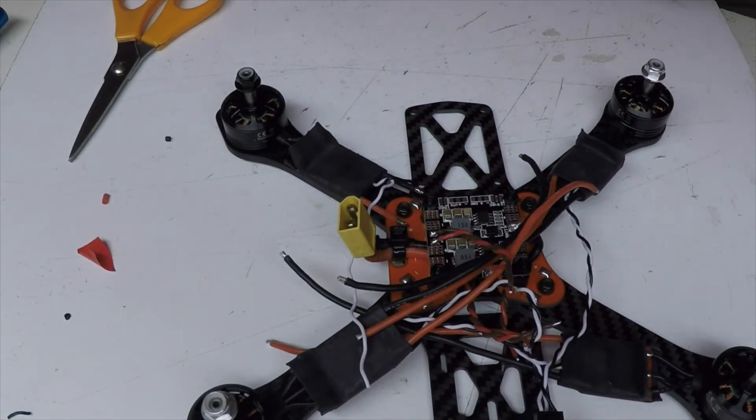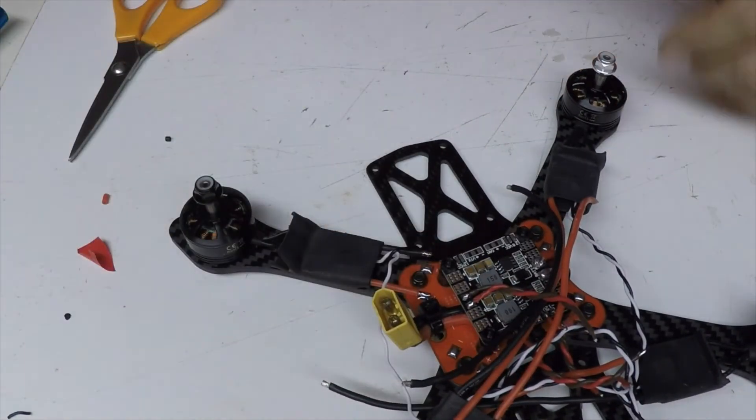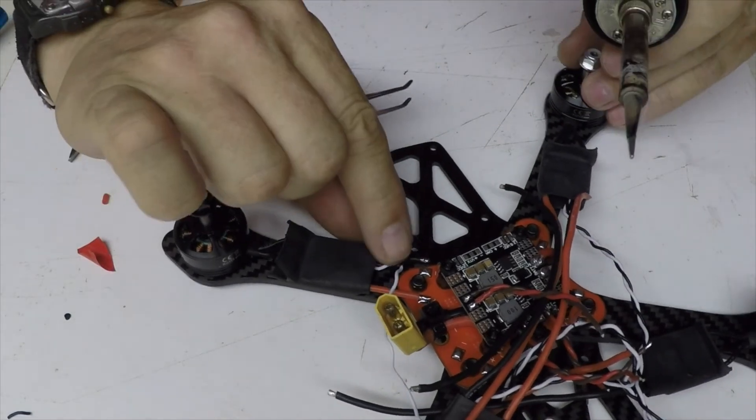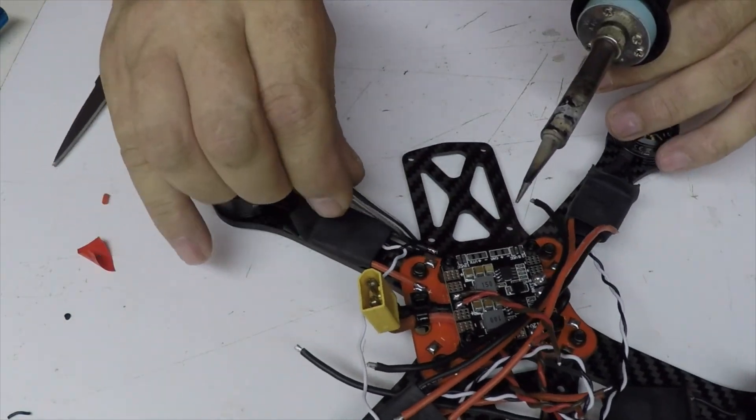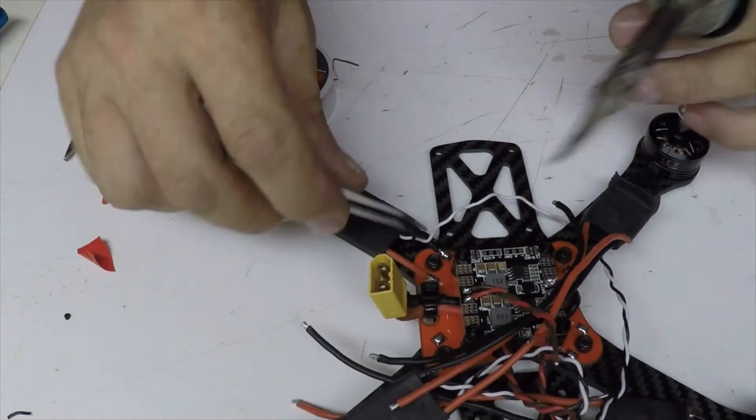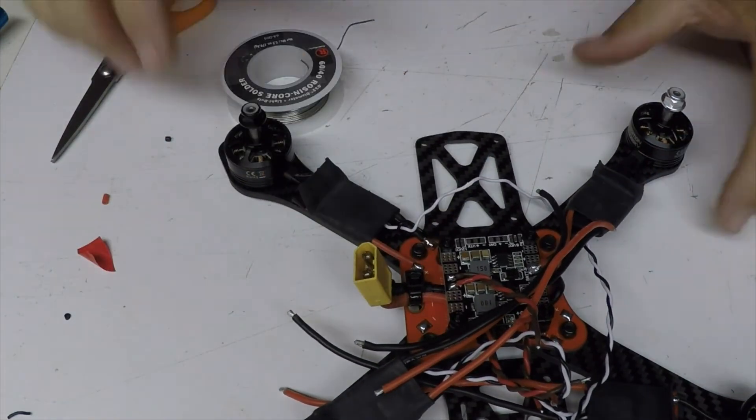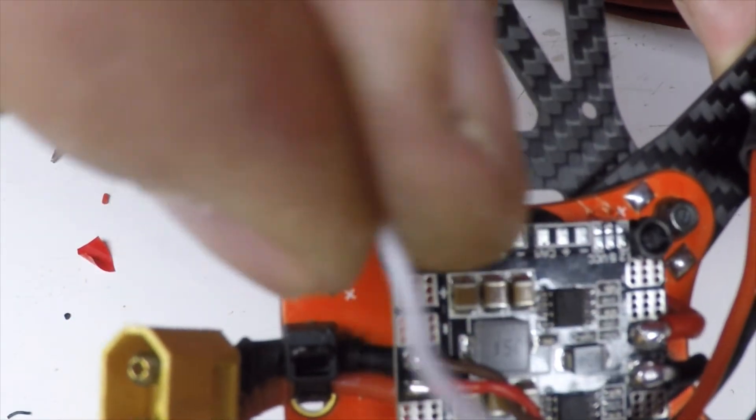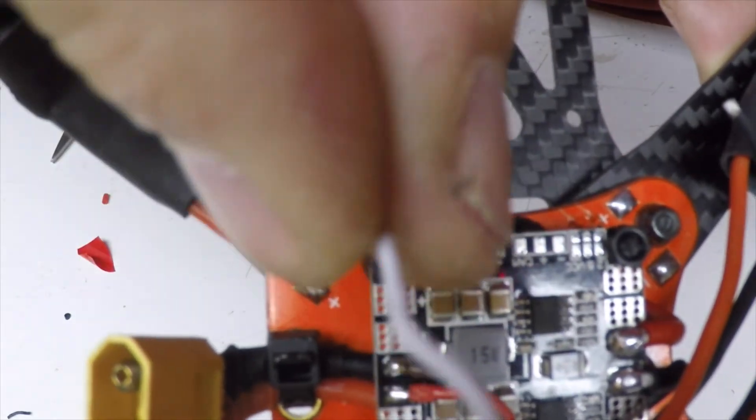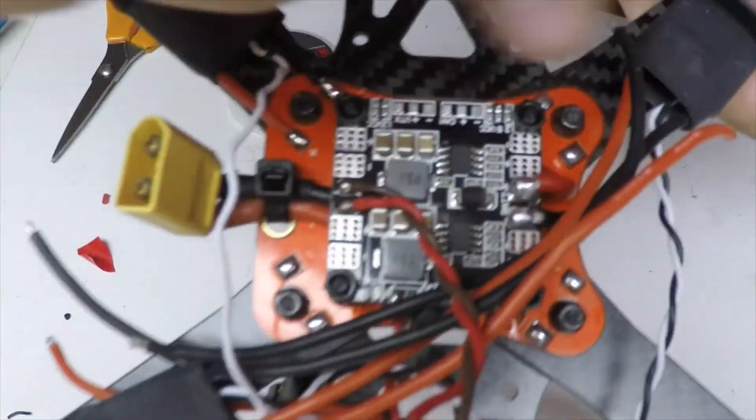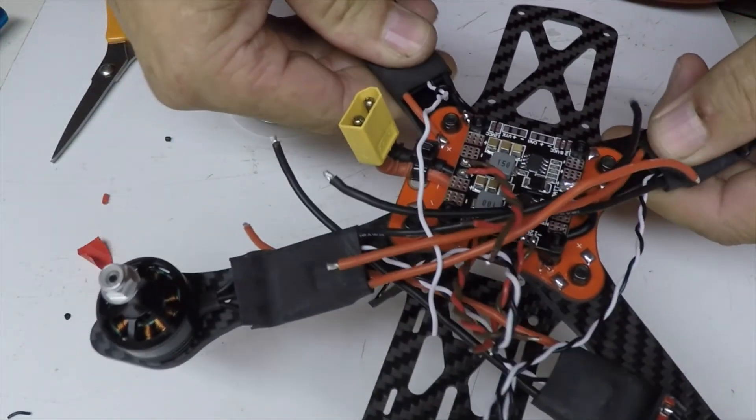Now I can get those ends soldered on there. Hopefully, you can see that. And the only thing I have coming up will be just this one signal wire. That's the only one I need to be fiddling with as far as on the control board. I'm going to do the other three. Clean up the mess, and then we'll come back.